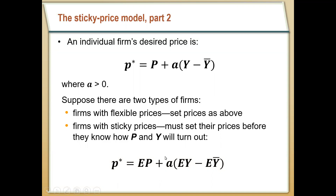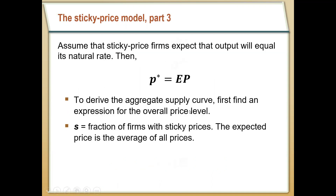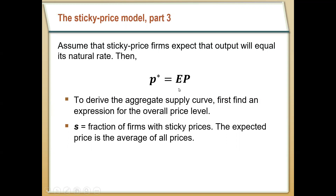For simplicity, we assume that a sticky price firm always sets their price assuming output is equal to the natural rate — that expected Y always equals expected Y-bar. In that case, the term EY minus EY-bar drops out, and they set their desired price P* in line with what they think the overall price level in the economy is going to be — that is, equal to EP.